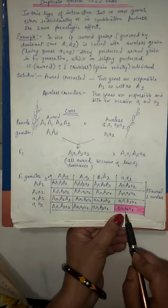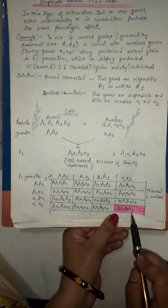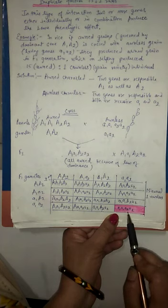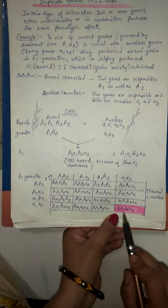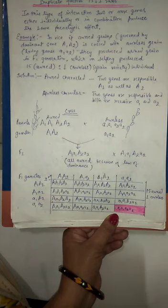In this case, where all are recessive, small a1, a1, as well as a2, a2, both the genes are in recessive form, so this will be ornless, because it has neither capital A1 nor capital A2. Both of the genes are absent.